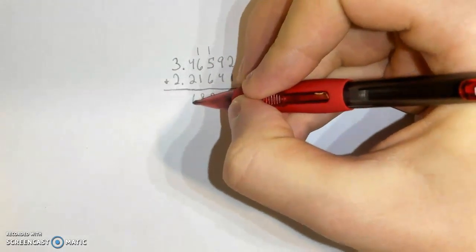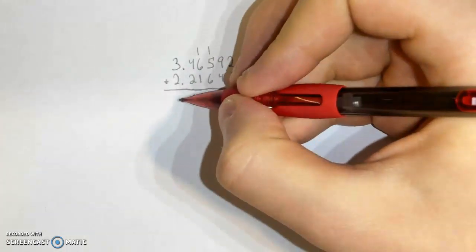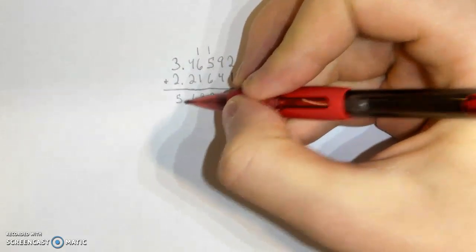4 plus 2. It's going to be 6. And then here we got 3 plus 2, which is 5. There's your answer.